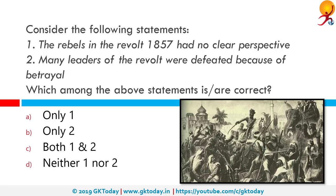Consider the following statements: 1. The rebels in the revolt of 1857 had no clear perspective. 2. Many leaders of the revolt were defeated because of betrayal. The correct answer is both 1 and 2. Causes of failure of the revolt include: localized and poorly organized revolt, no clear leader, no mass support, lack of common ideal amongst the rebels, and no support of ruling princes.